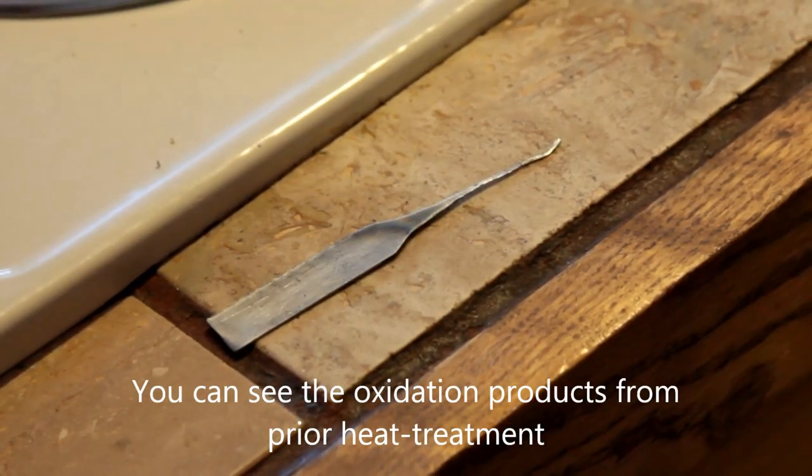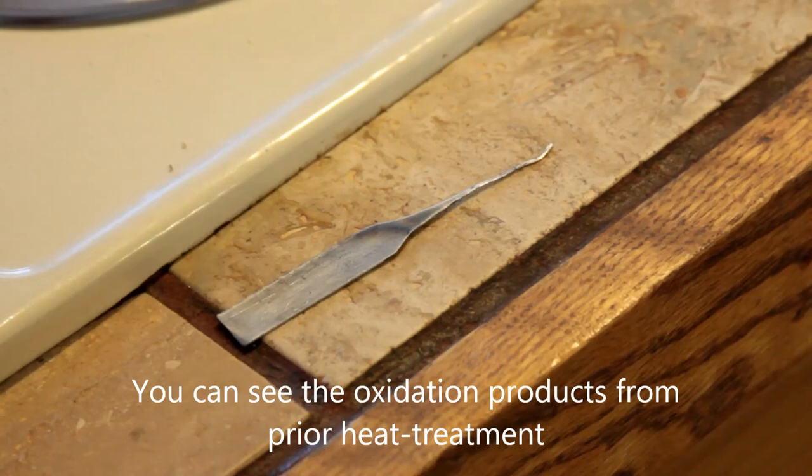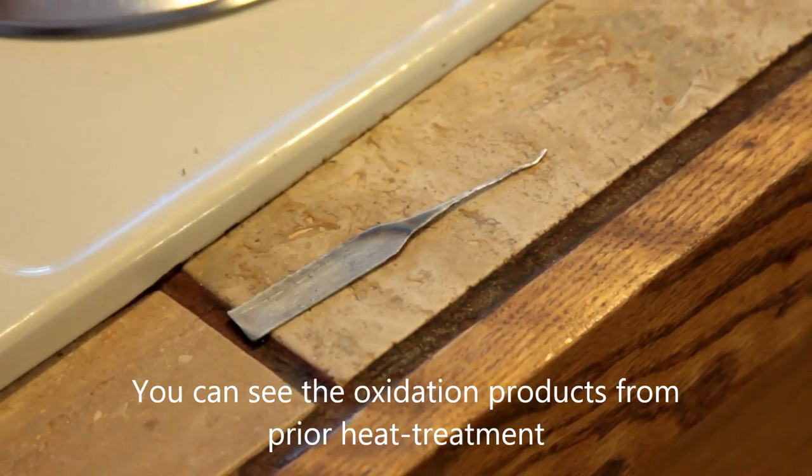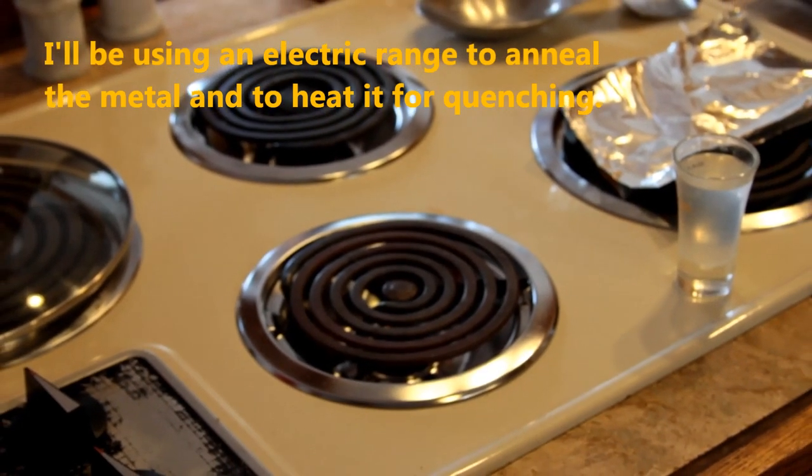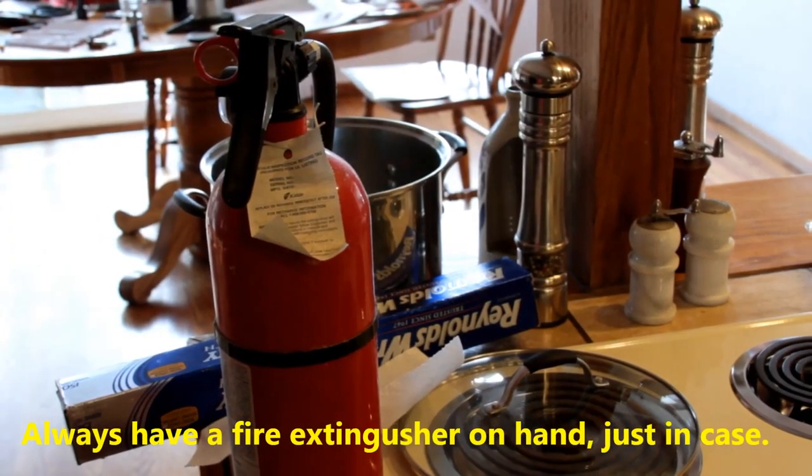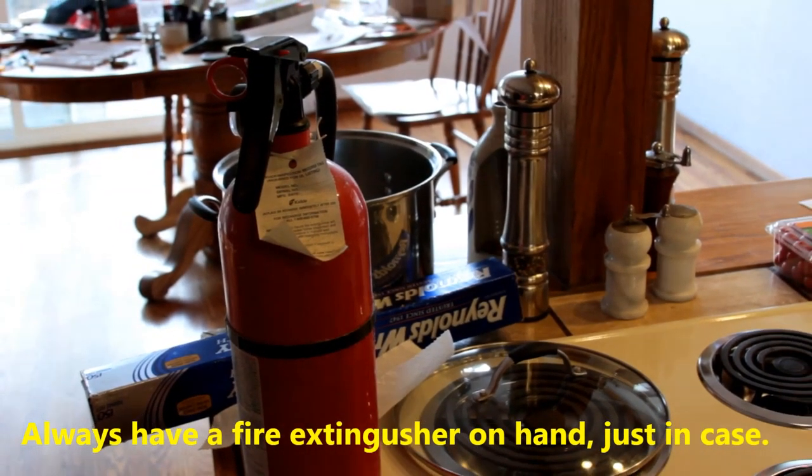I'm going to be doing the initial annealing and heat treatment hardening on my kitchen stove, so it's indoors. You want to be careful, have a fire extinguisher on hand, and just use appropriate precautions so you don't hurt yourself or others.